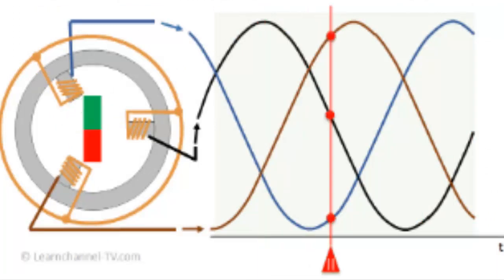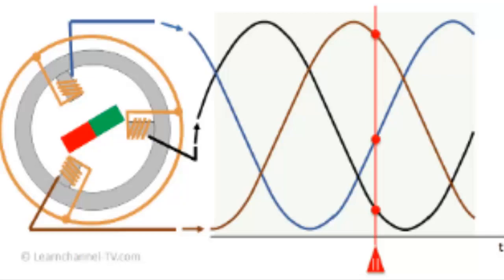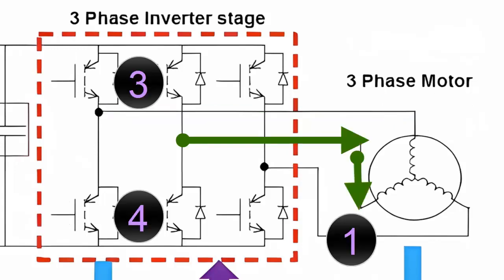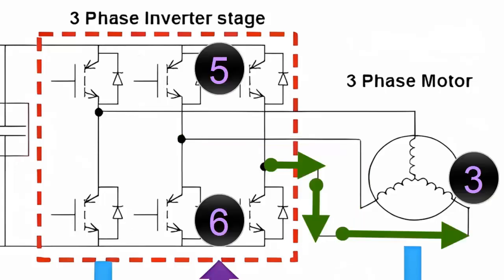3-phase current is alternating, meaning the current in each coil will circulate in 2 directions. Therefore, 2 transistors are used per motor coil, totaling 6 transistors, to supply the 3 compressor motor coils in both directions.